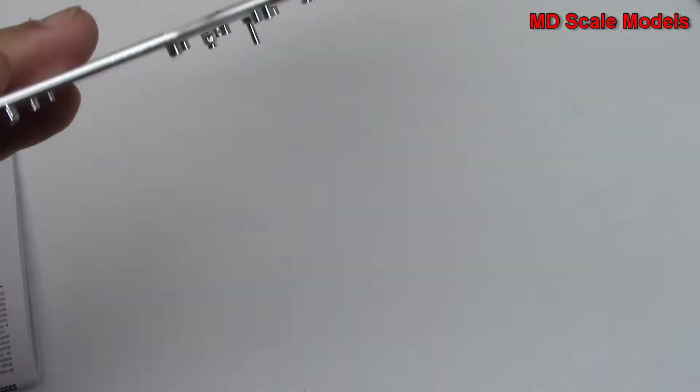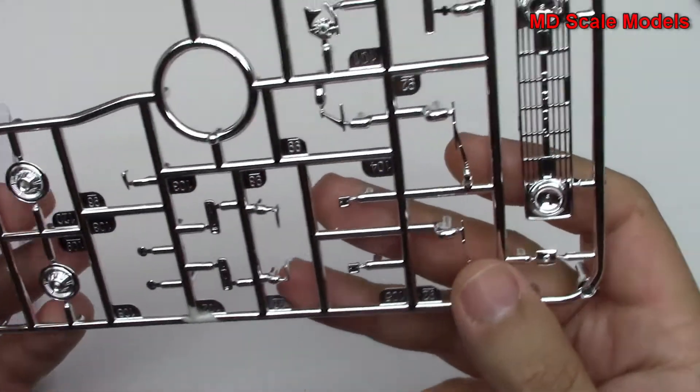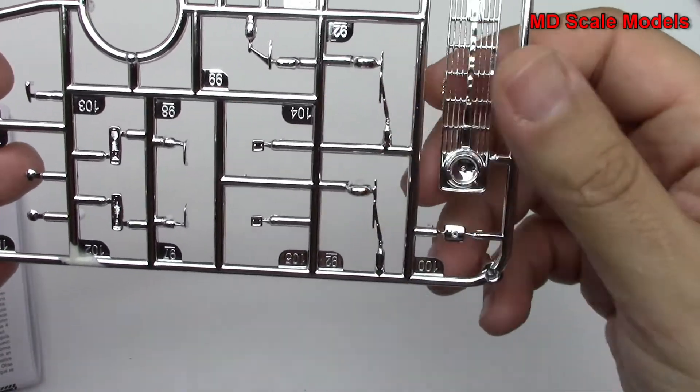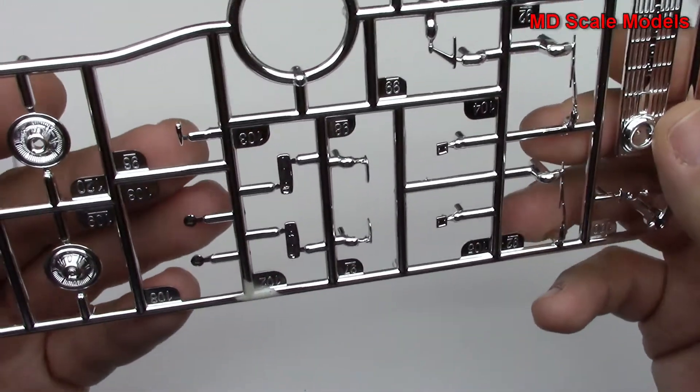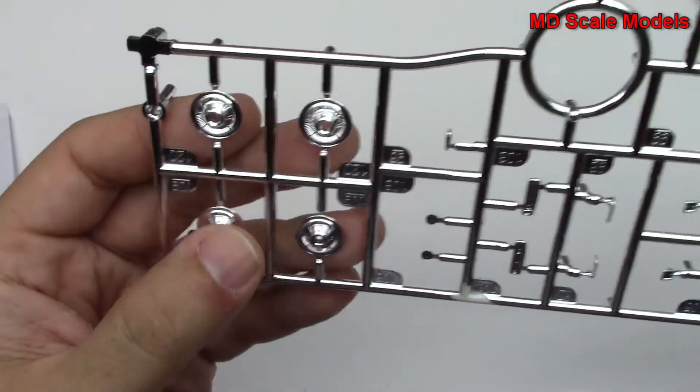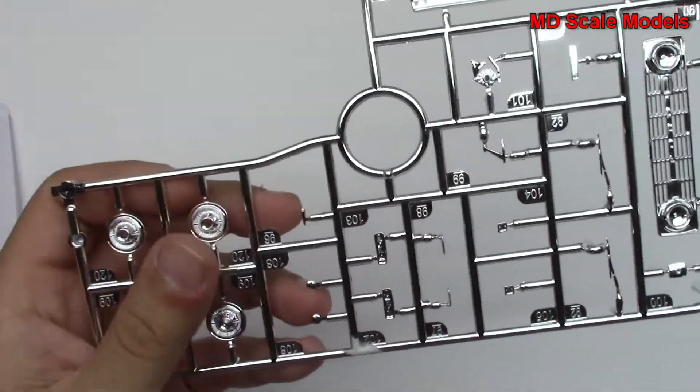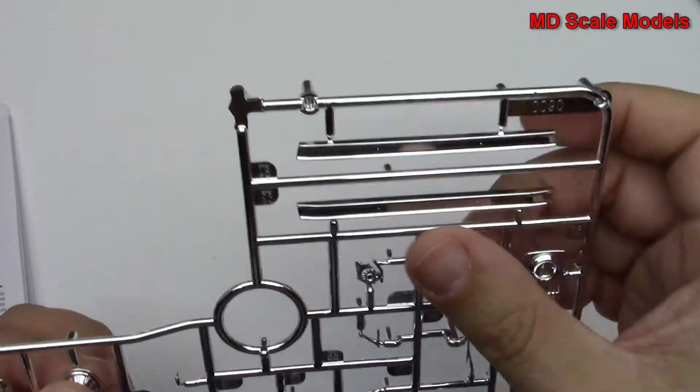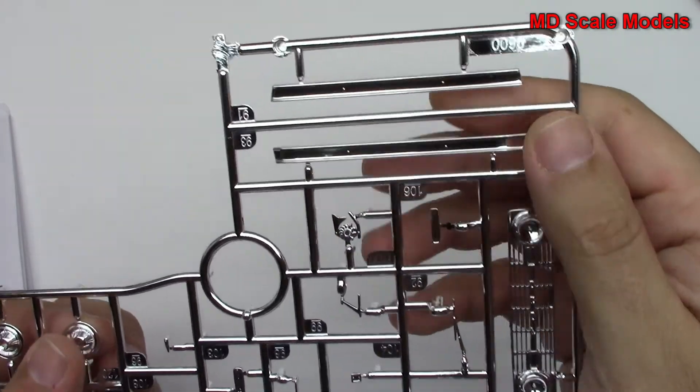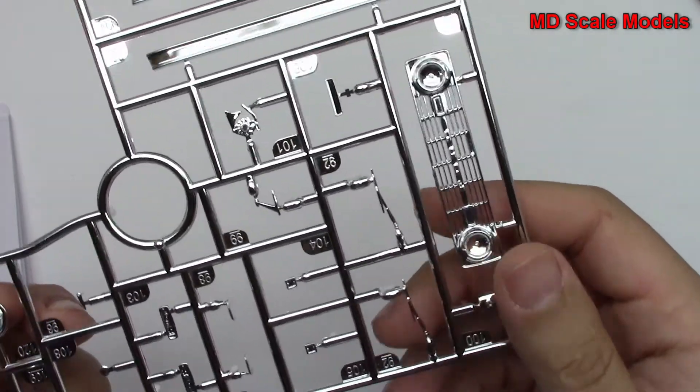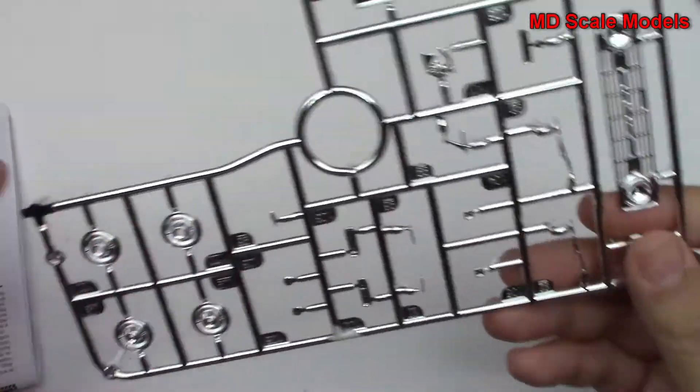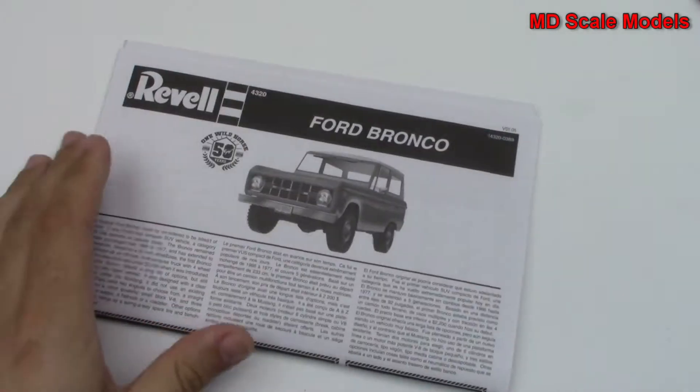Lastly, we have our chrome parts. We've got our front grille, windshield wipers there, and wheels, or I guess hubcaps there. Not really a fan of this kind of chrome painting because when you cut it, you've got to then clean up the area in between. But otherwise they're well molded.